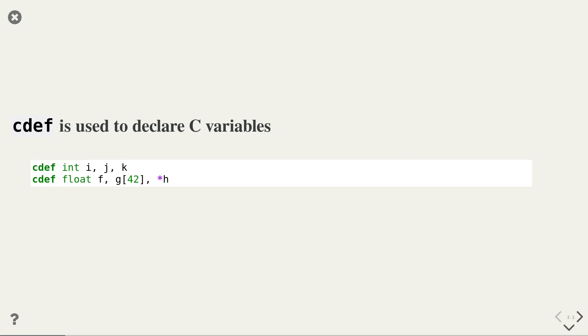The first important extension that Cython enables us to do is to declare variables and their types. Remember, in Python we do not typically declare and specify the type of a variable. In C, before using a variable, you have to declare it and you have to specify its type. So in Cython, you do that with the cdef keyword.